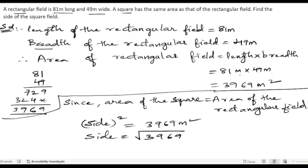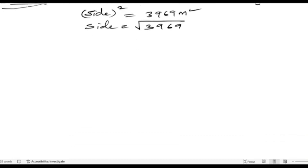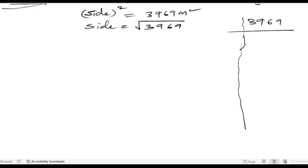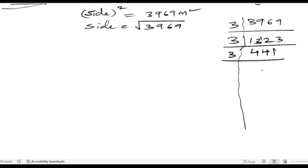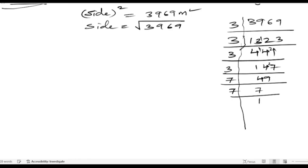Let us take out the factors of 3969. 3969 is divisible by 3: 3 ones are 3, 3 threes are 9, 3 twos are 6, 3 threes are 9. Continuing the factorization: 1323, 441, 147, 49, and 7. Writing down all the factors: 3 into 3 into 3 into 3 into 7 into 7.